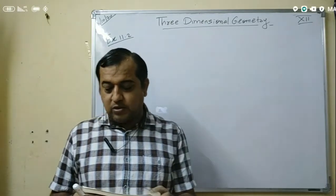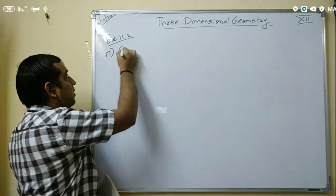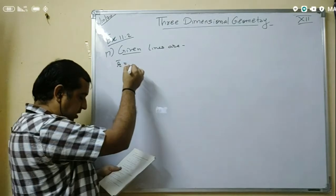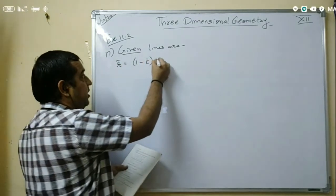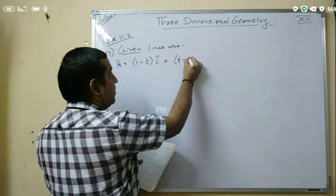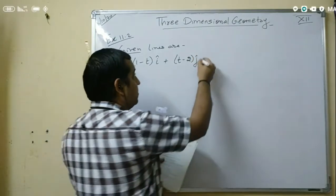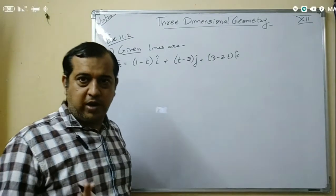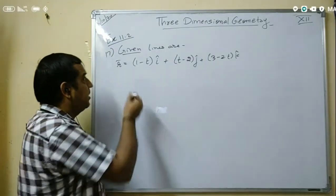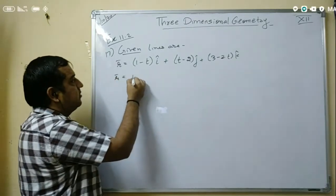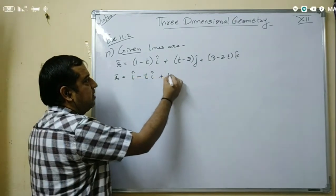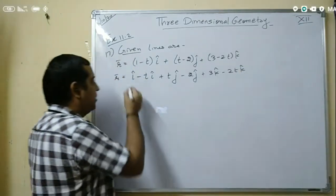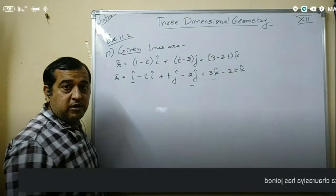17th question: find the shortest distance between the lines whose vector equations are given. The first line is vector r = (1 - t) i-cap + (t - 2) j-cap + (3 - 2t) k-cap. Expanding, this is i-cap - t·i-cap + t·j-cap - 2j-cap + 3k-cap - 2t·k-cap. The terms free from t are separated.